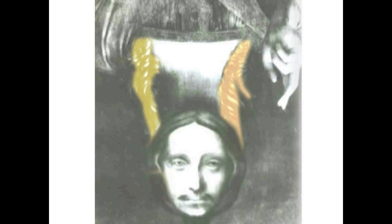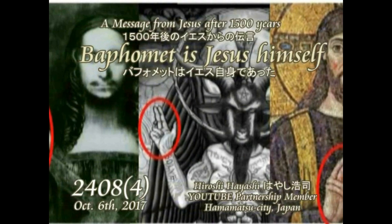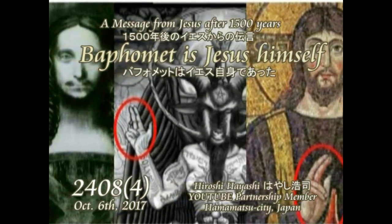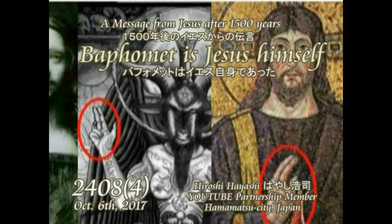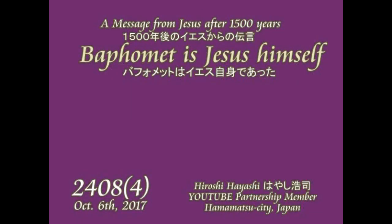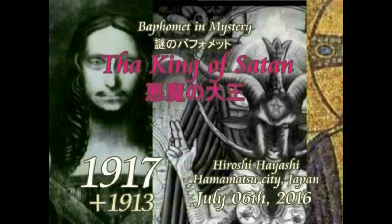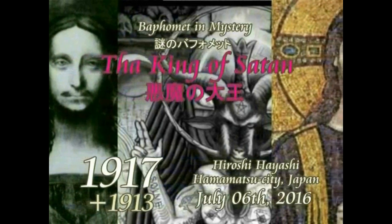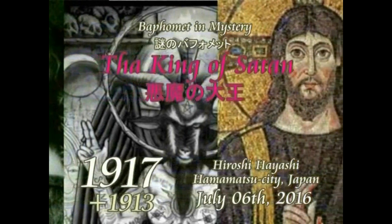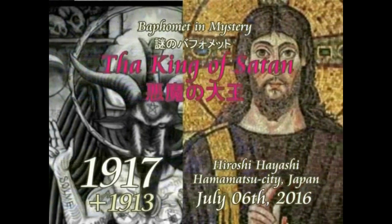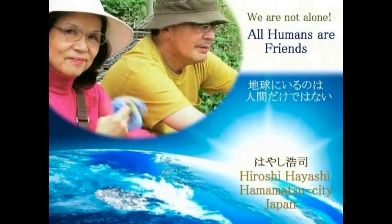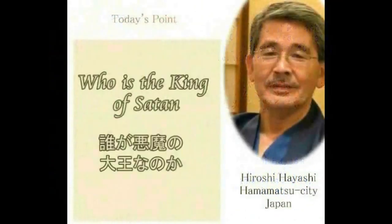Baphomet, the King of Saturn, is a very awful-looking goat-headed figure found in several instances throughout the history of occultism.